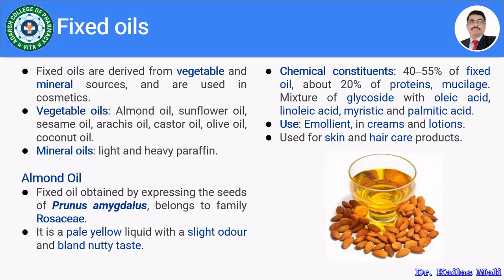The examples of vegetable oils used in herbal cosmetics are almond oil, sunflower oil, sesame oil, arachis oil, castor oil, olive oil, and coconut oil. There may be some other fixed oils as well, but these are the major vegetable oils used in the formulation of cosmetic preparations.